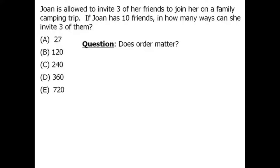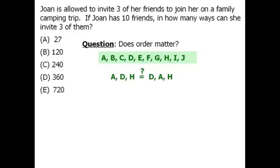When tackling most counting questions we should begin by asking: does order matter here? For example, if we let the following letters represent Jones' 10 friends, is inviting friends A, D, and H different from inviting friends D, A, and H? The answer is no, since order does not matter and we are still inviting the same three friends. So if order does not matter, we are dealing with a combination question, and we have a nice formula for combination questions.